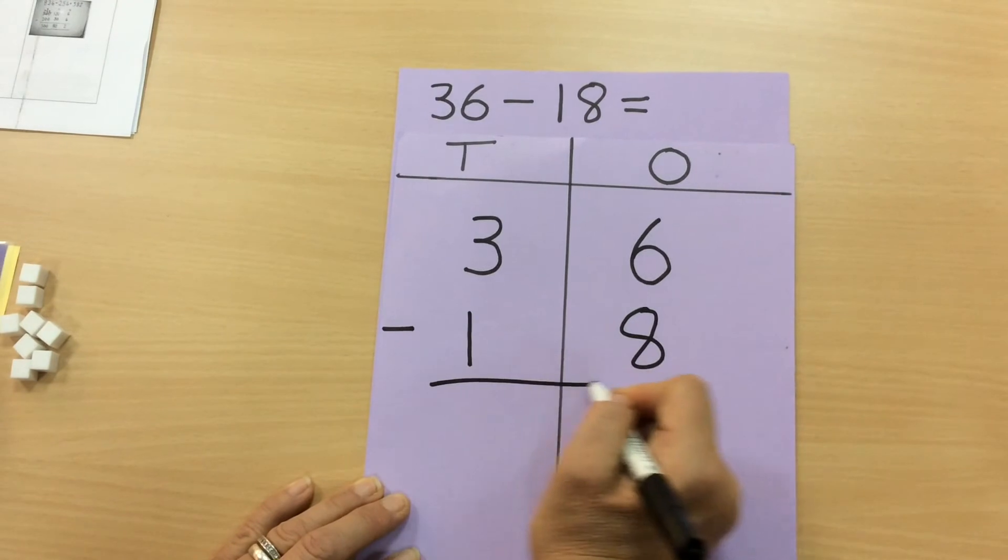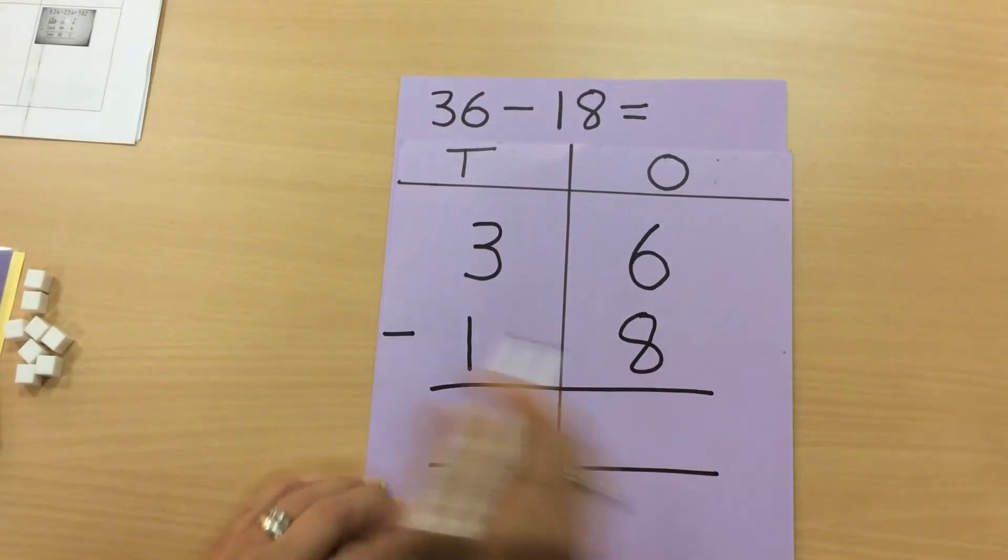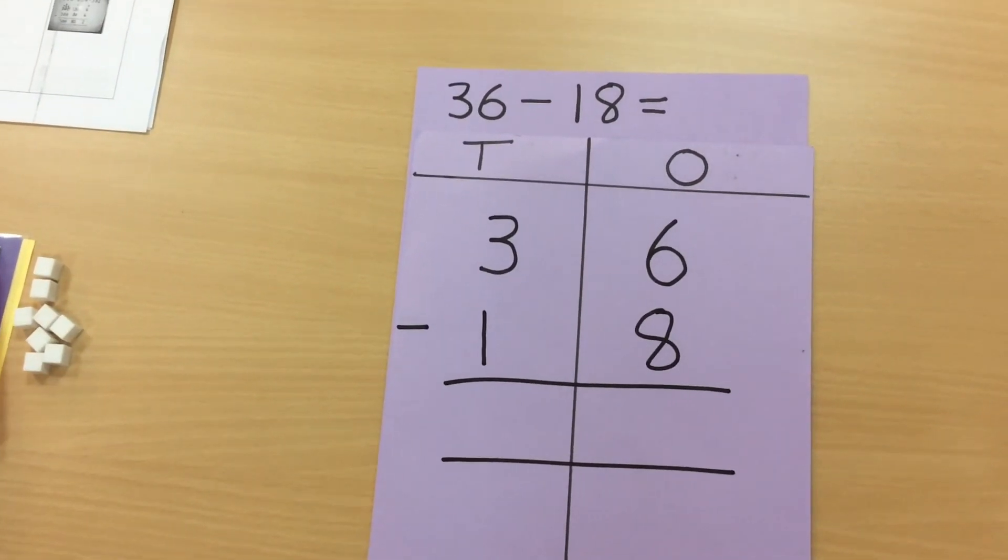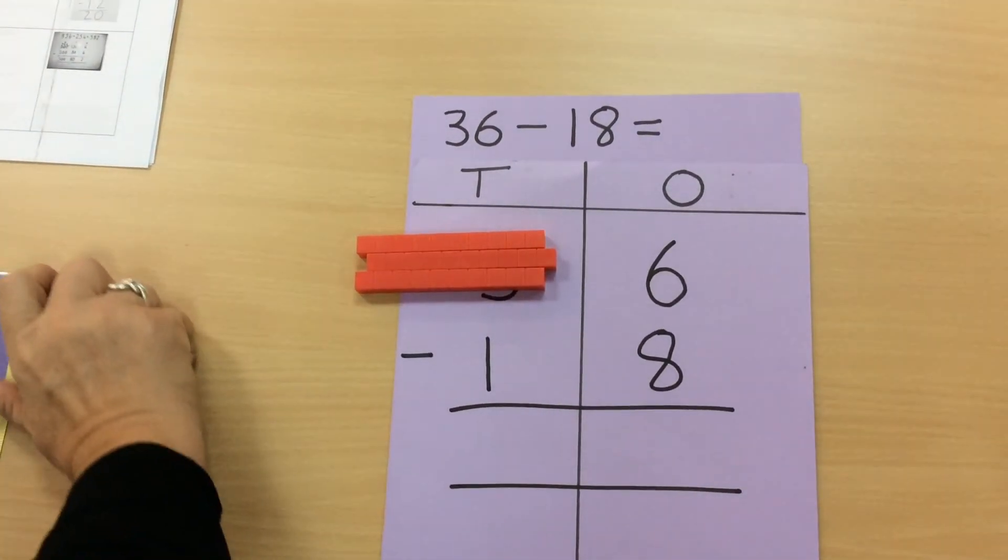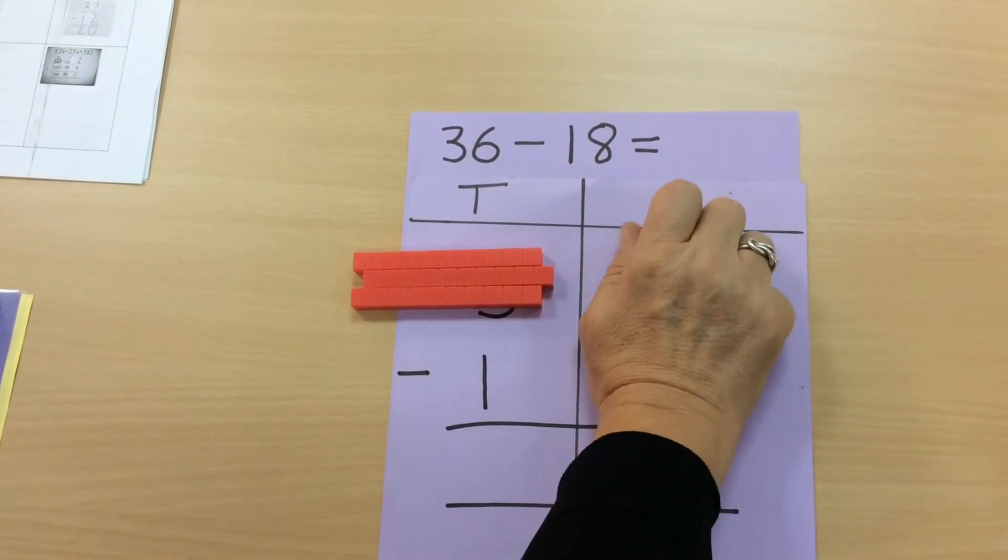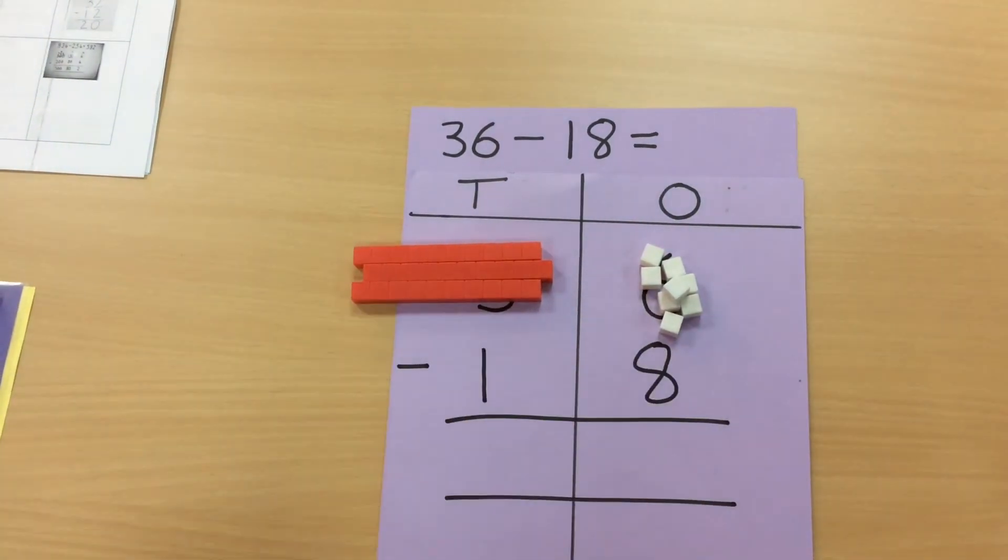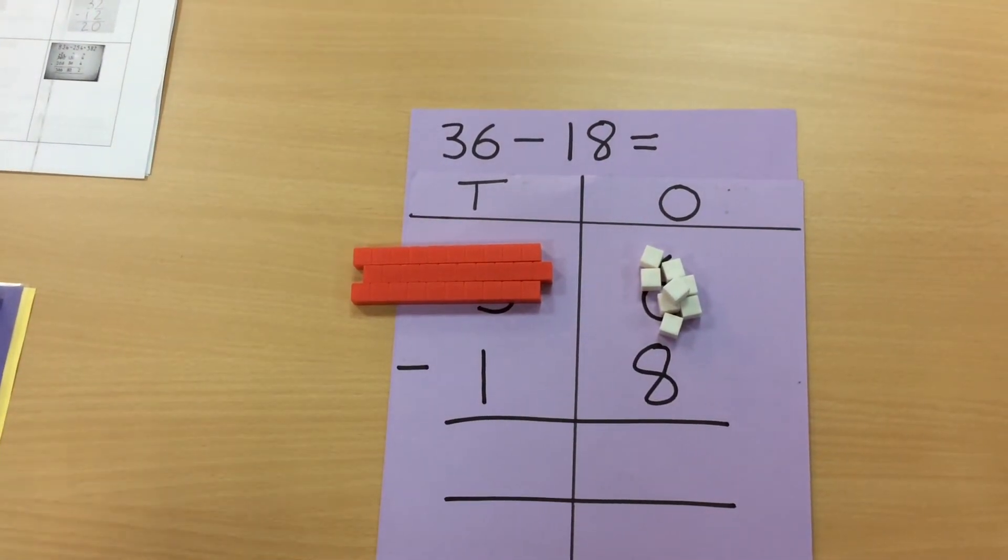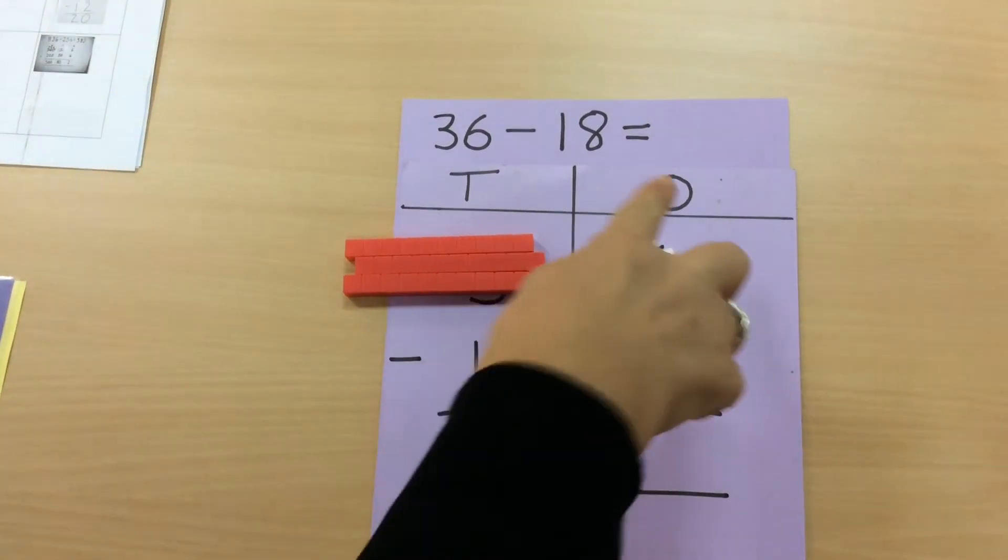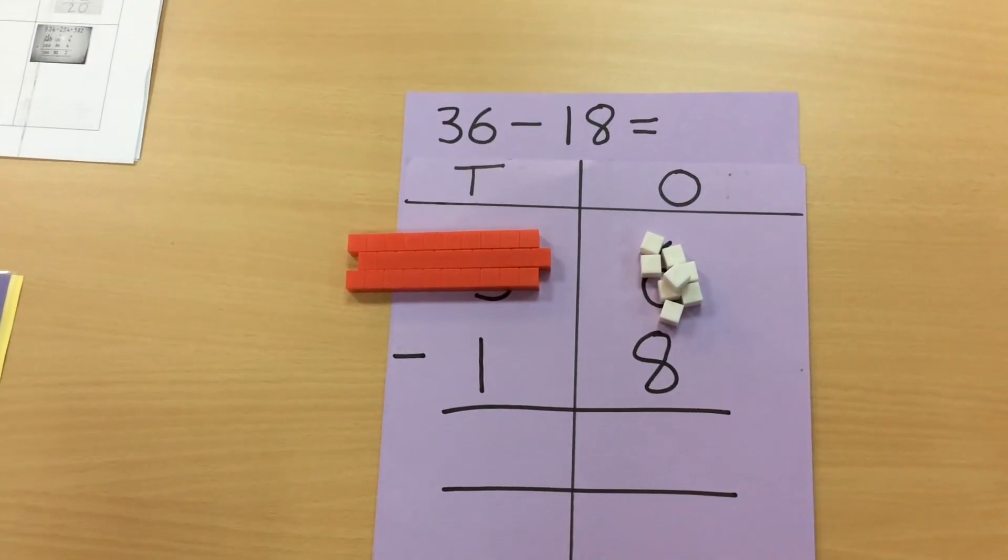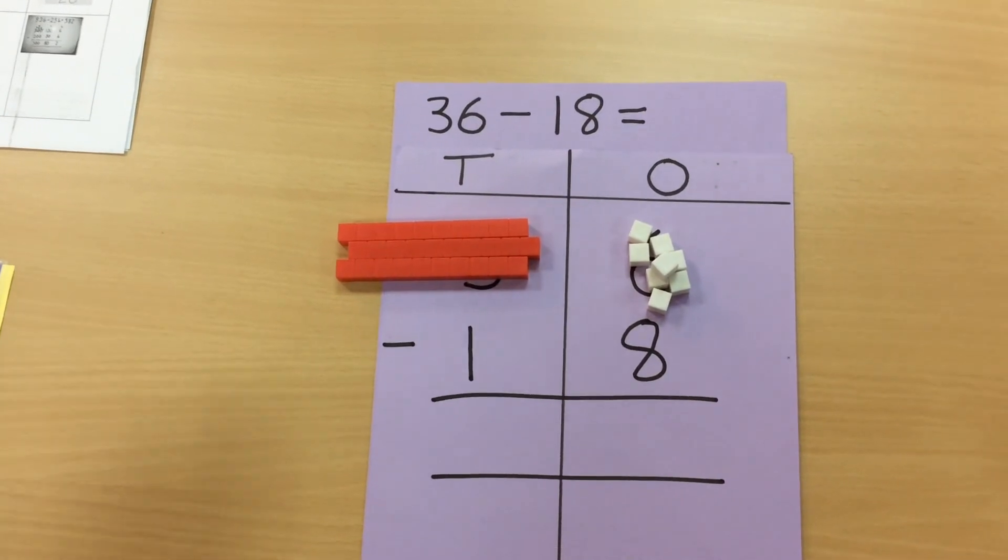And again they can still use the equipment to help them at the beginning stages, so they can put their three tens and their six ones and then still try and take away like we did earlier on in the video. And keeping them in the columns helps the children to remember their place value.